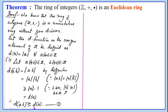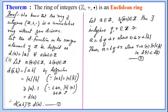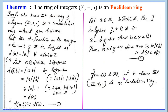Let us prove the second condition, namely the division algorithm. Let A belong to Z and B not equal to 0 belong to Z. Then there exist integers Q and R such that A equals B times Q plus R, where 0 is less than or equal to R and R is less than |B|. This is known as the division algorithm. Thus A equals BQ plus R where R equals 0 or |R| is less than |B|, that is D(R) is less than D(B). This is condition 2, the second condition of the Euclidean ring. Thus from 1 and 2, Z is a Euclidean ring.